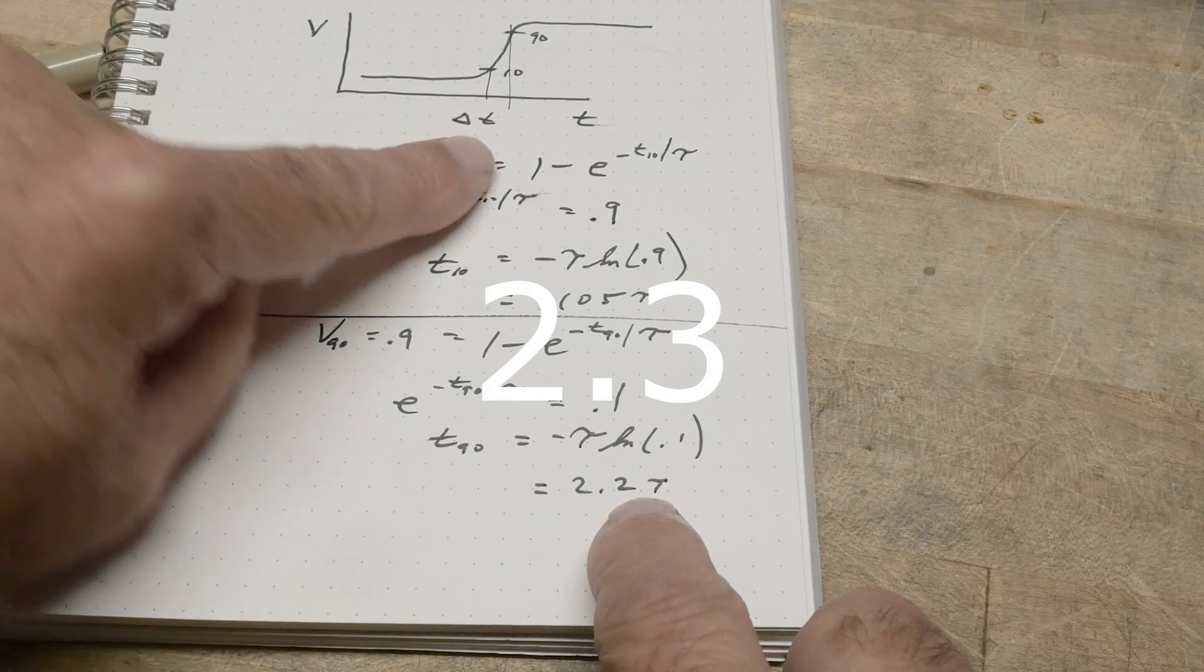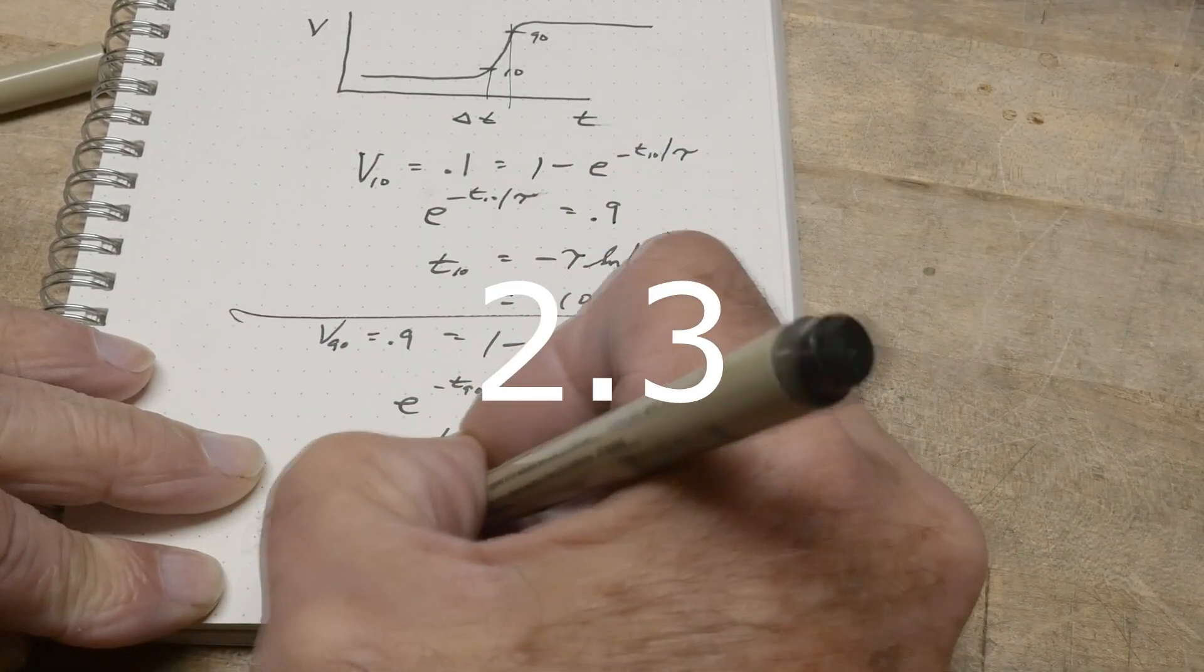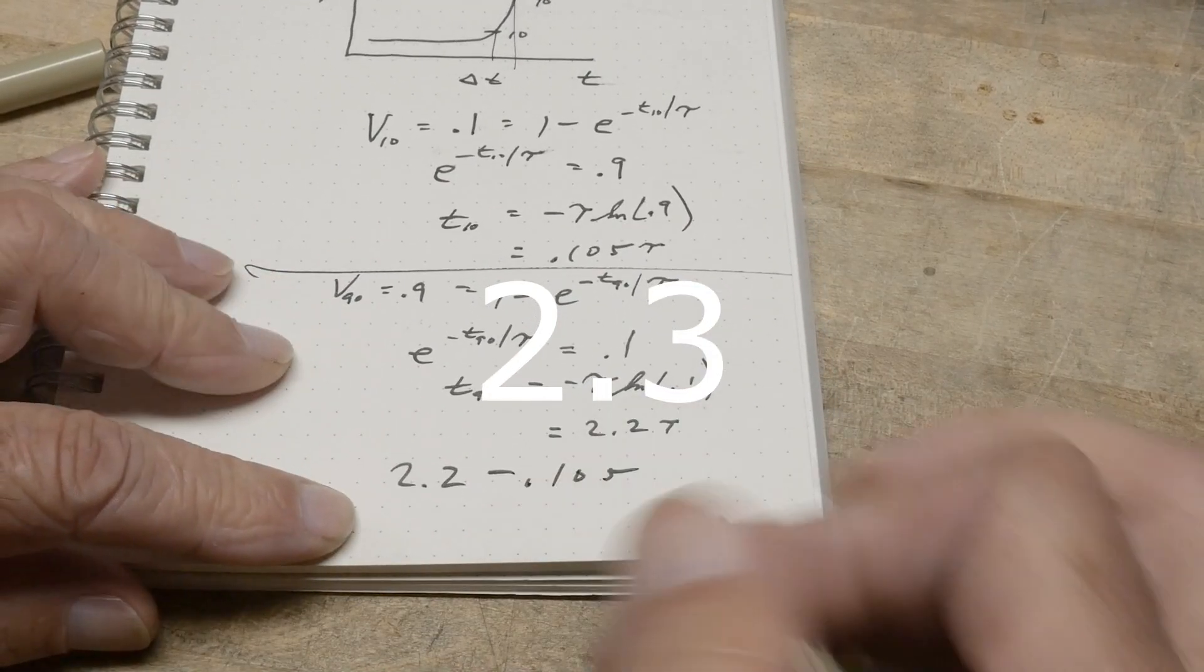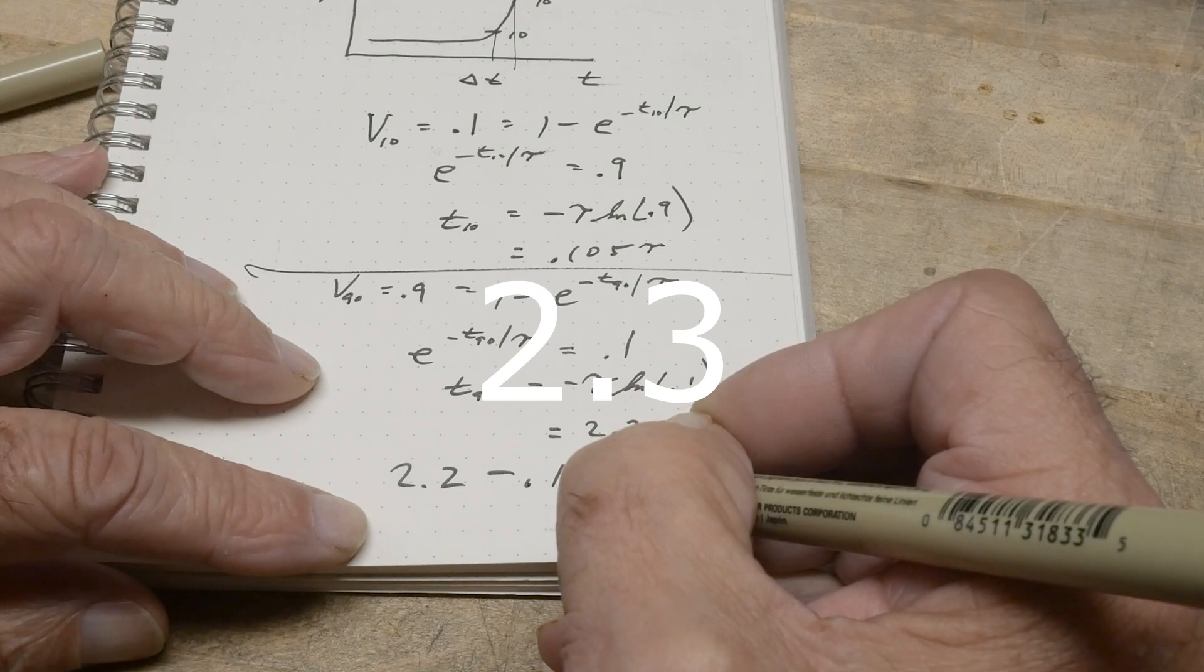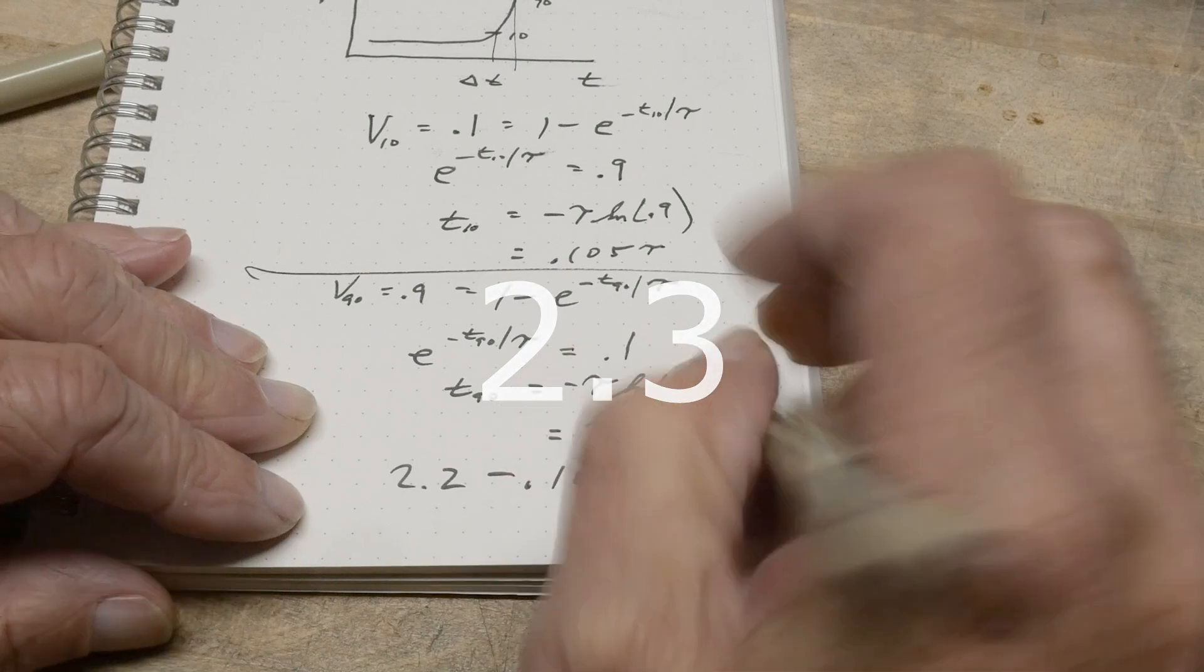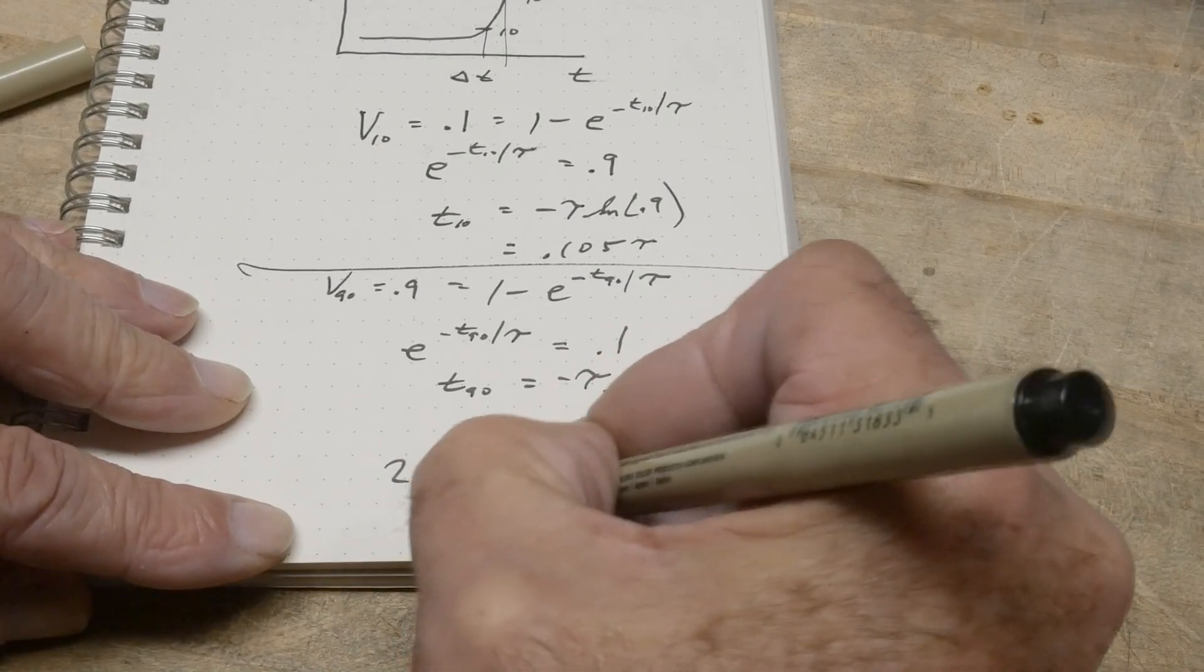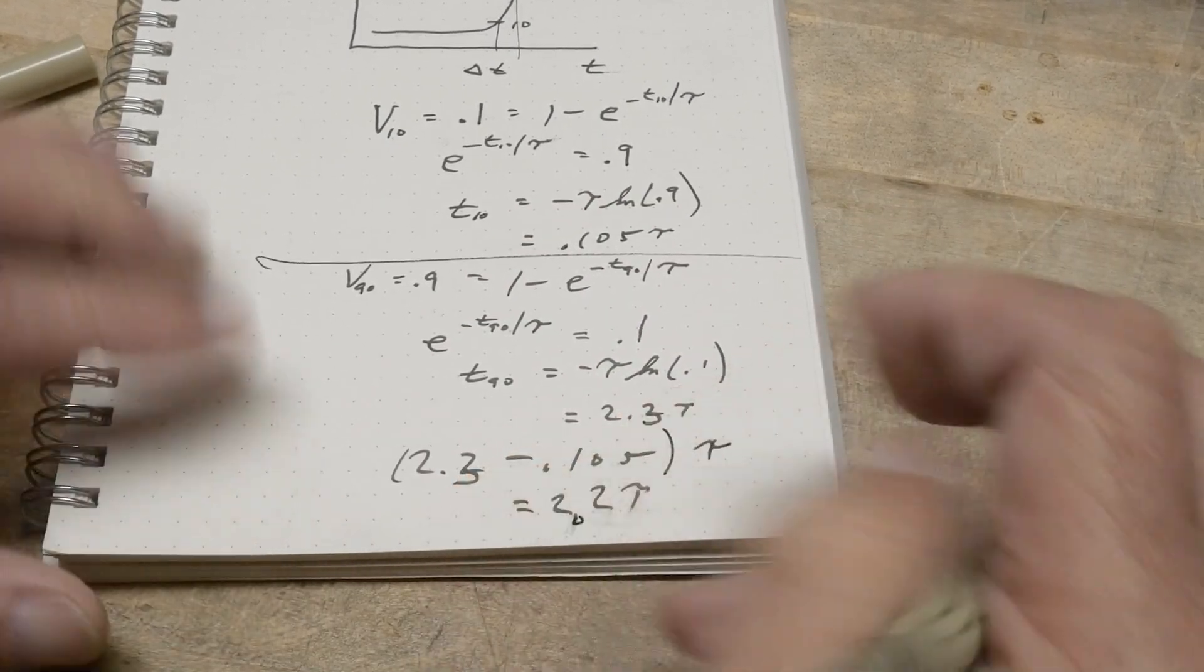And so what is delta t? Delta t is the 90% minus the 10%. What is the 90%? 2.3. And what is the 10%? 0.105. And what is this? I did something wrong. I'm sorry. This is 2.3. I got ahead of myself. This number is 2.3. And then when you do 2.3, which is the 90% minus the 10%, 0.105, this is going to be 2.2 tau, right? These were both times tau. You get 2.2 tau. Well, 2.2 tau. That's interesting.